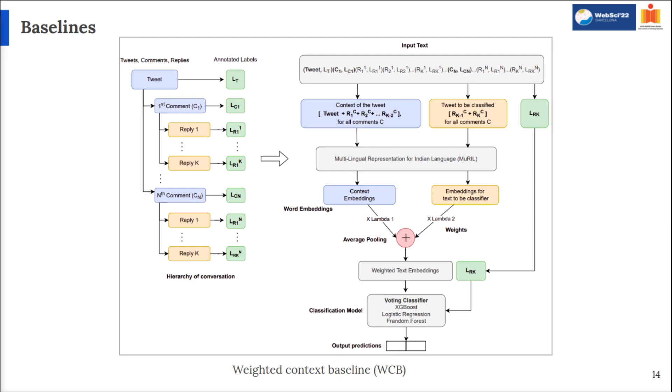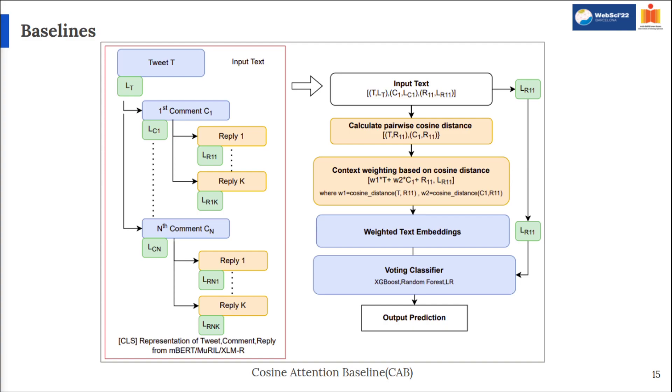But with the weighted context baseline, the concatenation of embedding is not a naive and simple addition. The intuition here is not to prioritize context and the actual text equally, like before. The text to be classified is weighed differently using lambda 1 and lambda 2 that are learned during the training itself. Finally, for our last baseline, we weigh the previous context based on similarity measured of cosine distance with the text to be classified. Like before, the weighted embeddings are passed through classification head to get the predictions. With this we have all our baselines ready.